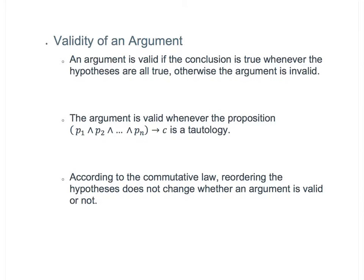An argument is valid if the conclusion is true whenever all the hypotheses are true; otherwise the argument is invalid. In other words, an argument is valid if and only if the conditional statement — if p1 and p2 and all the way to pn, then c — is a tautology. This means if all the hypotheses are all true, then the conclusion has to be true.